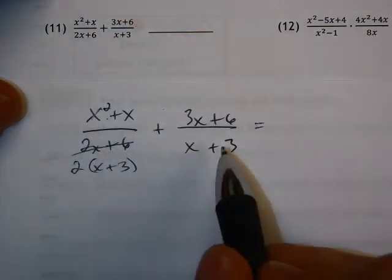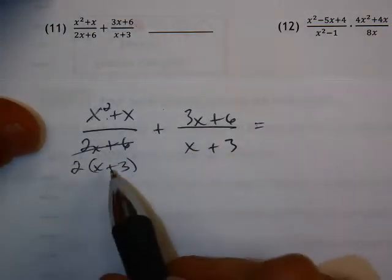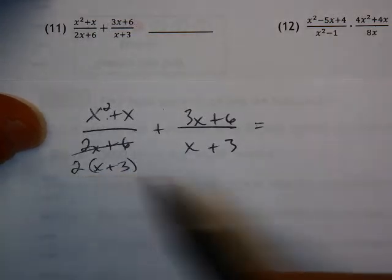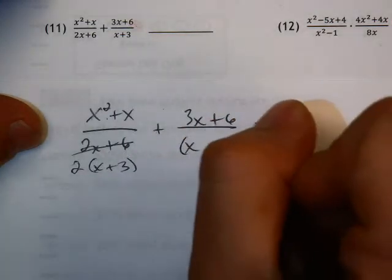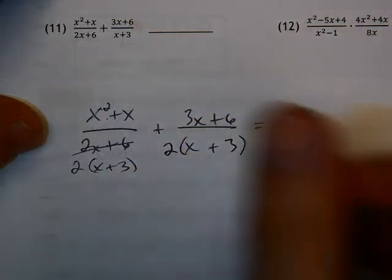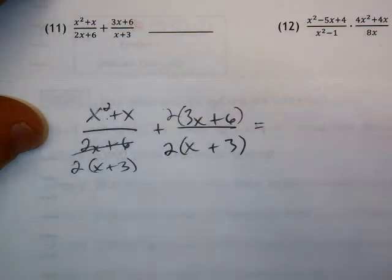Now notice that I've got an x plus 3 here, and an x plus 3 here. The one thing I'm missing to get common denominator is this 2. So I'm going to multiply the denominator by 2. But since I did that on the bottom, I have to also do that on the top.